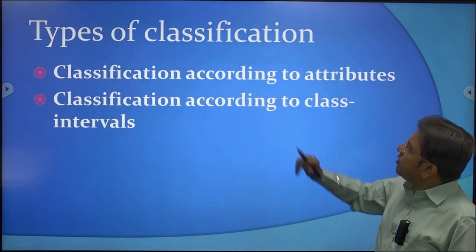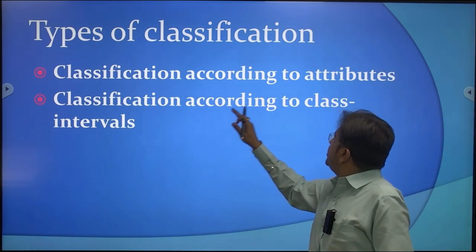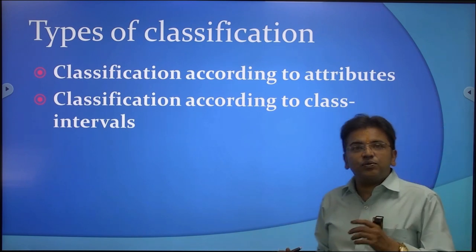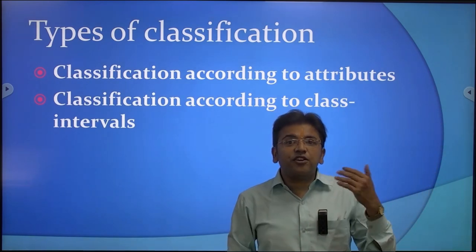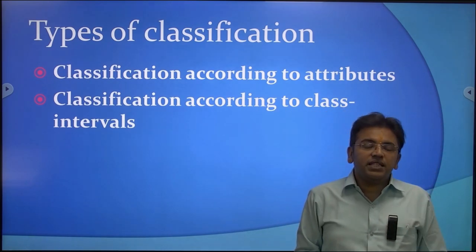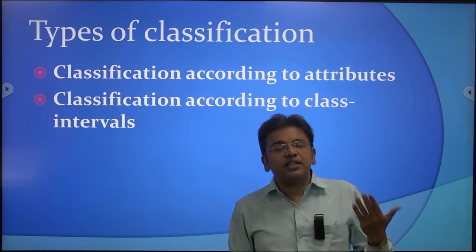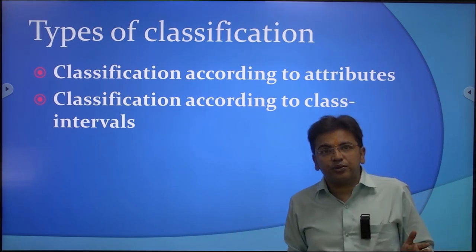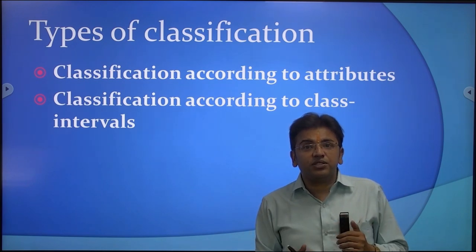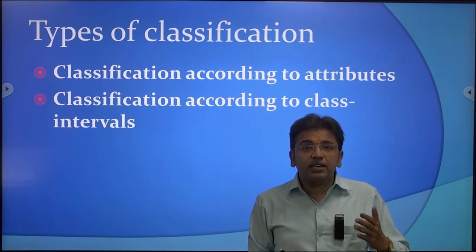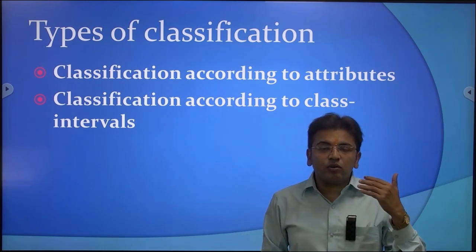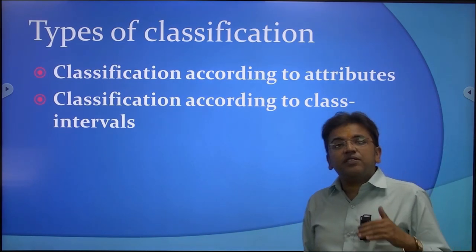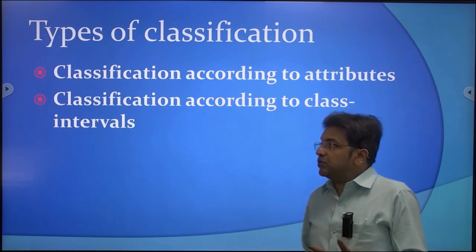There are two types of classification: classification according to attributes and classification according to class intervals. If the study is qualitative, we classify data into different attributes important for the research. But if it is quantified data — a quantitative study — we classify data into class intervals.